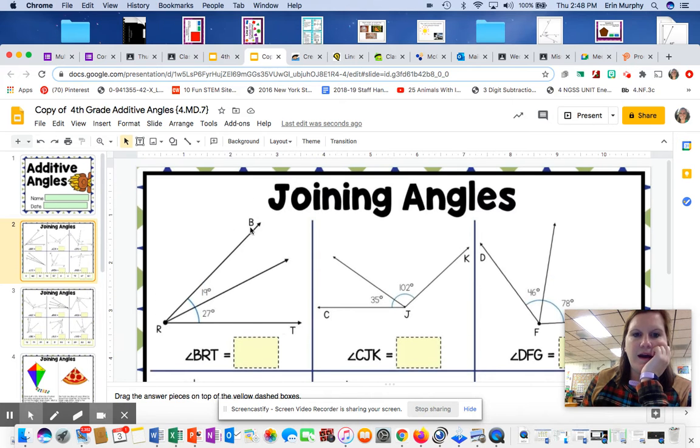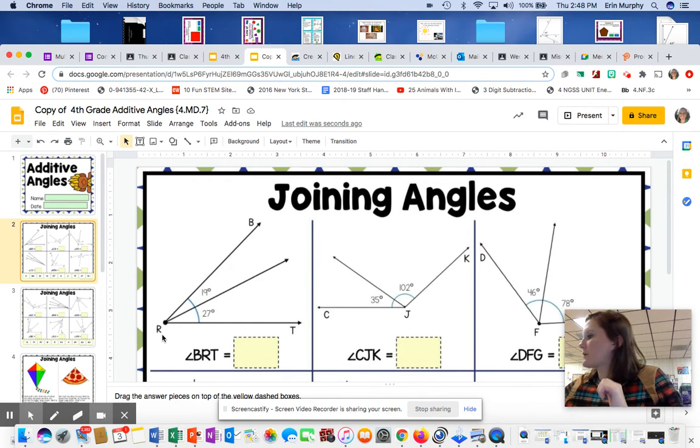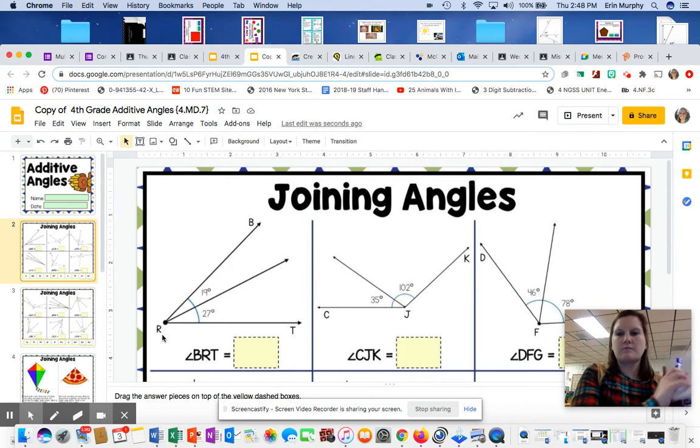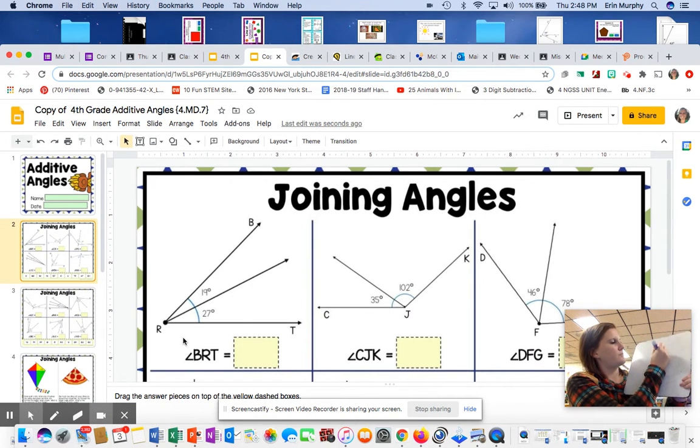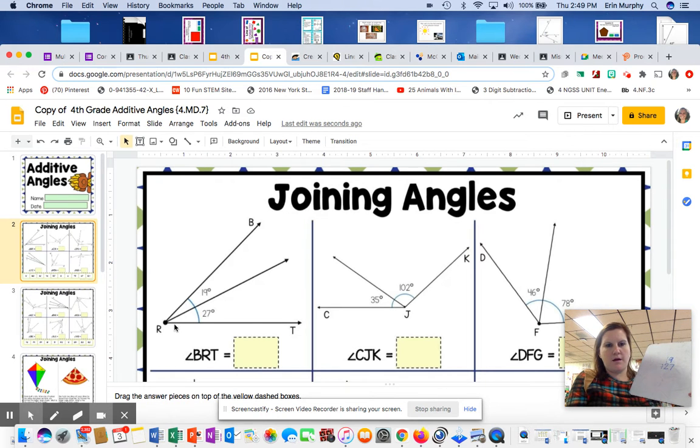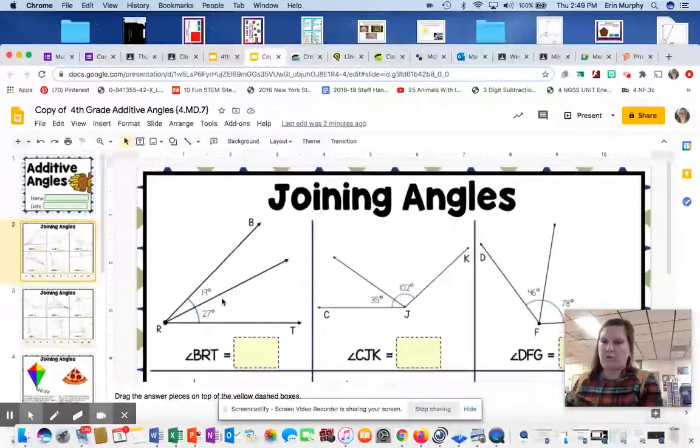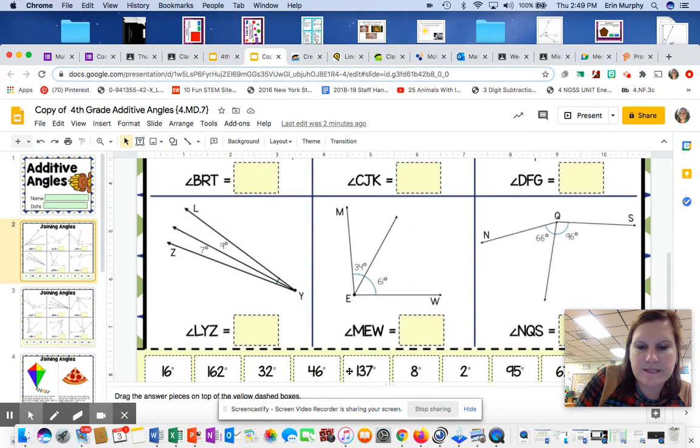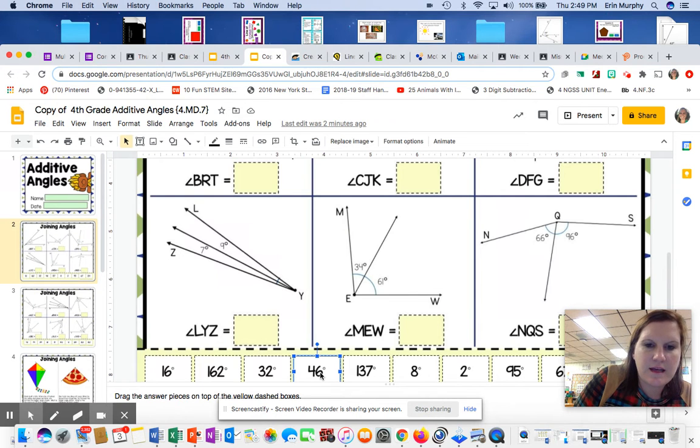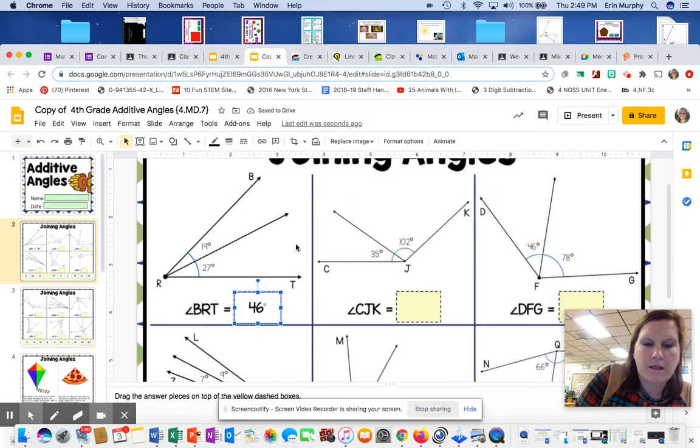All right, so you have these two angles that we're joining together. So I have 19 and 27. So since I'm trying to find what BRT is, I need to add those two numbers together. 9 plus 7 equals 16. I put a 6 here. Carry the 1. 1 plus 1 equals 2 plus 2 equals 4. So I know that angle is going to have to measure 46. So you're going to look for the 46 down here on the bottom. Here it is. You're going to click it, and you should be able to drag it to the BRT. That's where BRT is.